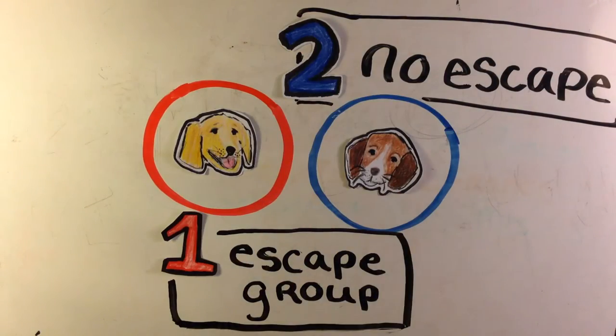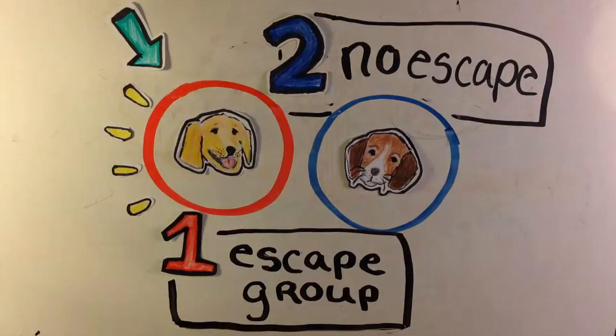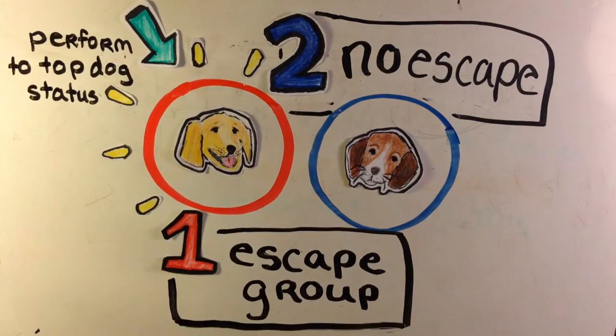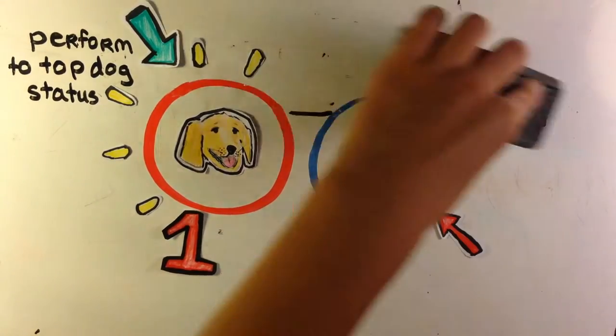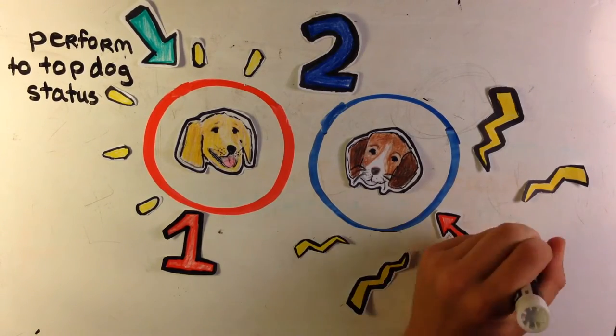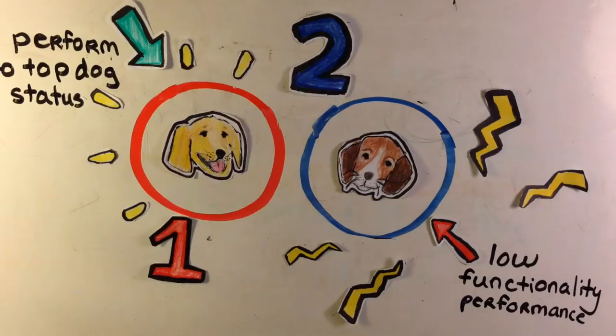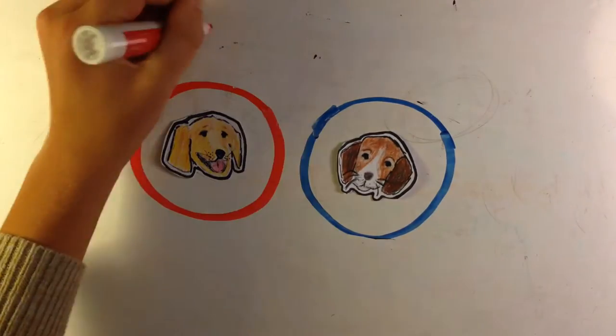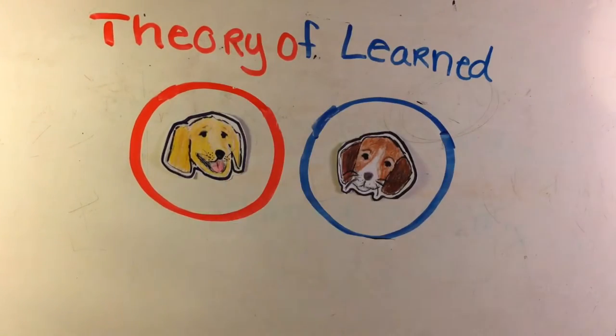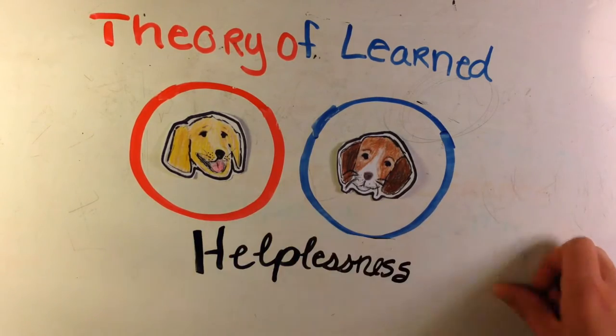It was soon discovered after experimenting with both groups a second time and allowing both to escape, those in the initial group were able to terminate the shocks quickly and efficiently by shifting the board. However, the second group, even after training with the escape panel, failed 9 out of 10 times to escape the shocks even when an opportunity was given to them, revealing that dogs determined their actions were independent of whether the shocks could continue or not, developing the theory of learned helplessness.